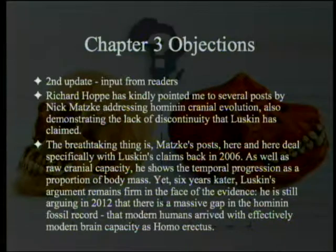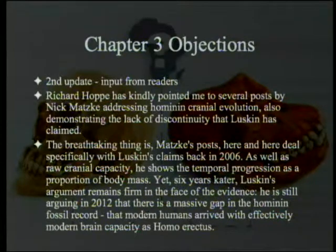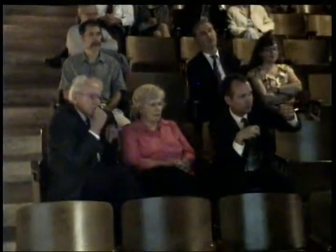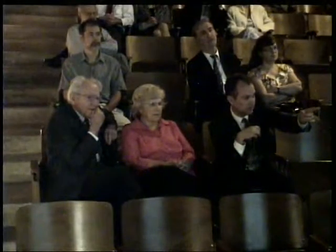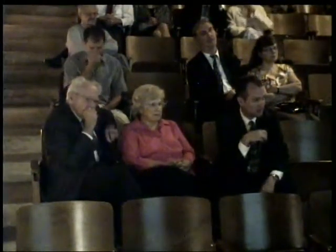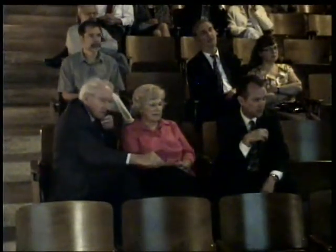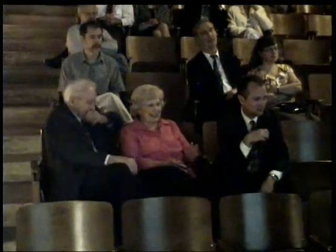I think that's a misstatement of Luskin's opinion. I suppose if you say 'effectively modern,' I think he would say that Homo erectus were on average smaller than the average human today, but significantly above the average ape capacity. That temporal progression as a proportion of body mass is what cranial capacity is related to — body mass. If you're a bigger person, you'll have a bigger brain, but that doesn't mean you'll be any smarter. Although it's interesting because people do look up to people who are taller and think they're smarter.